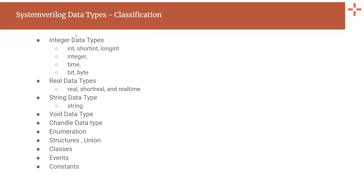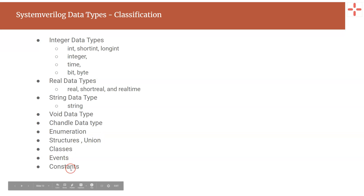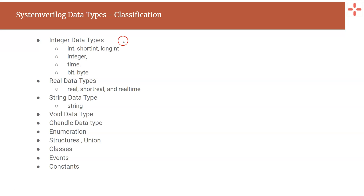Note that not all data types in SystemVerilog can hold all four values. Some can hold only two values — 0 and 1 — and some can hold all four. This is a broader classification of SystemVerilog data types: integer data types, real data type, string data type, void data type, chandle data type, enumerations, structures, union, classes, events, and constants. Integer data types are declared using keywords: int, short int, long int, integer, time, bit, and byte. Real types are declared using real, shortreal, and realtime.